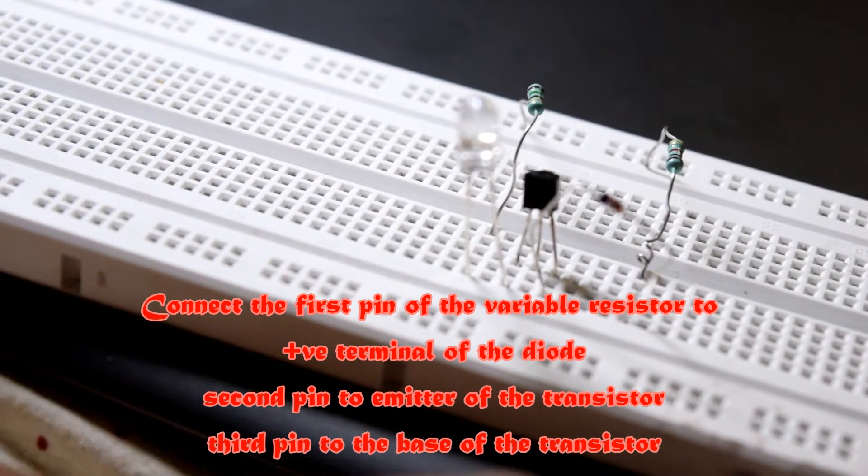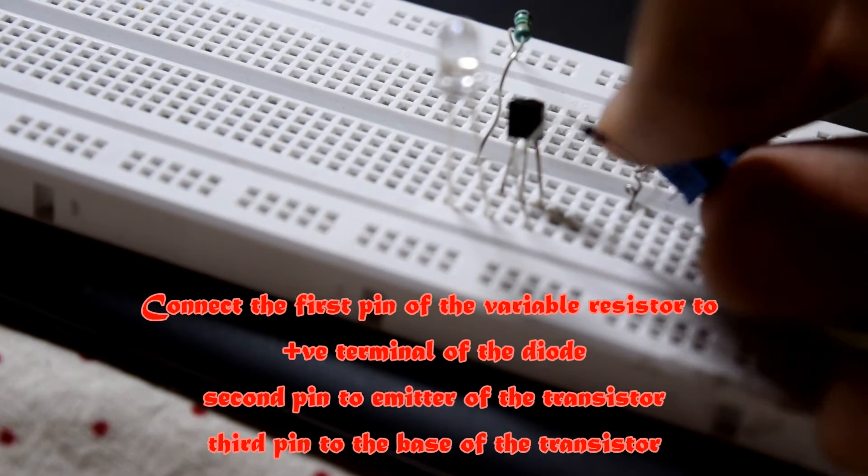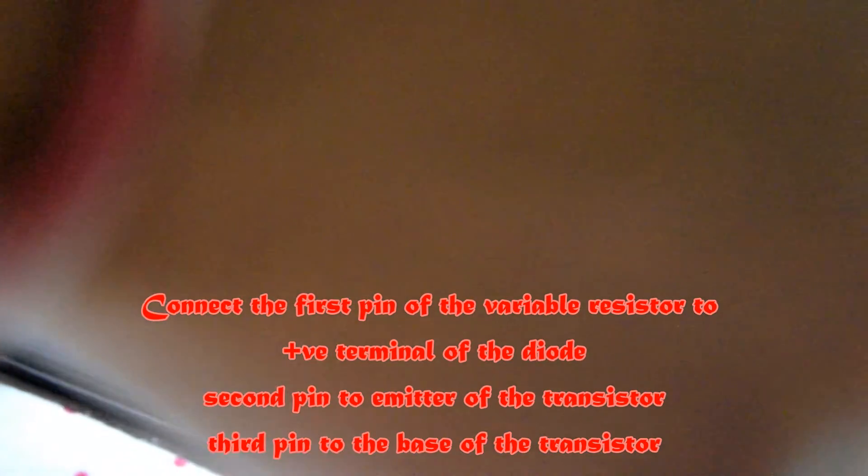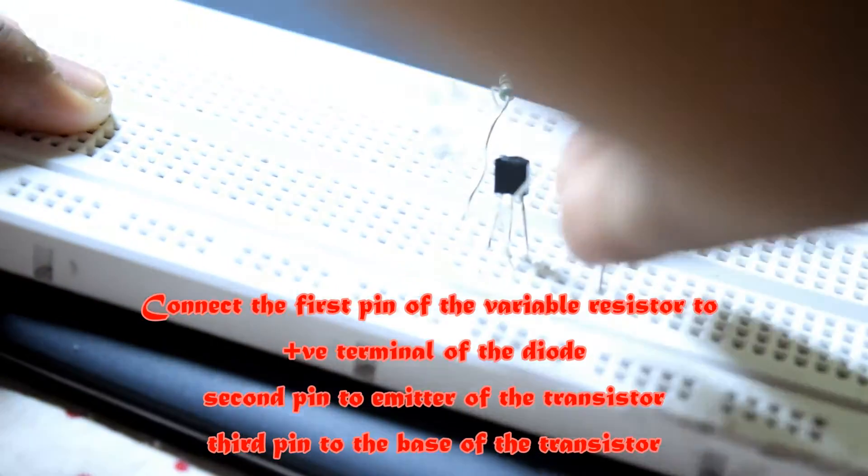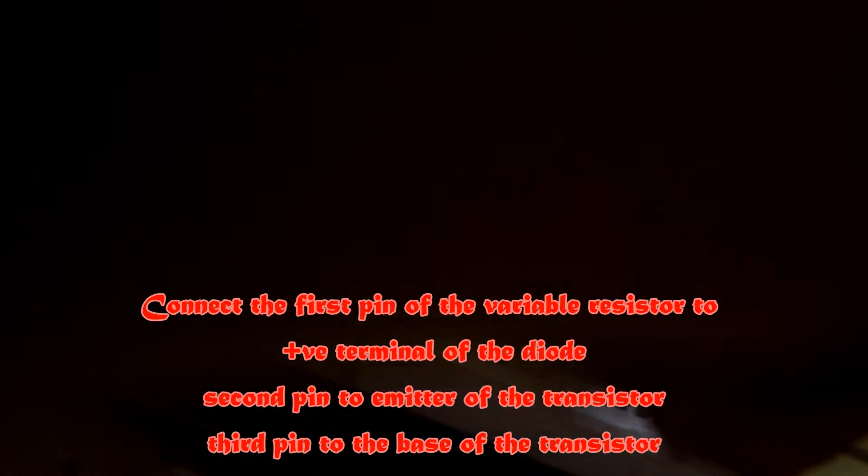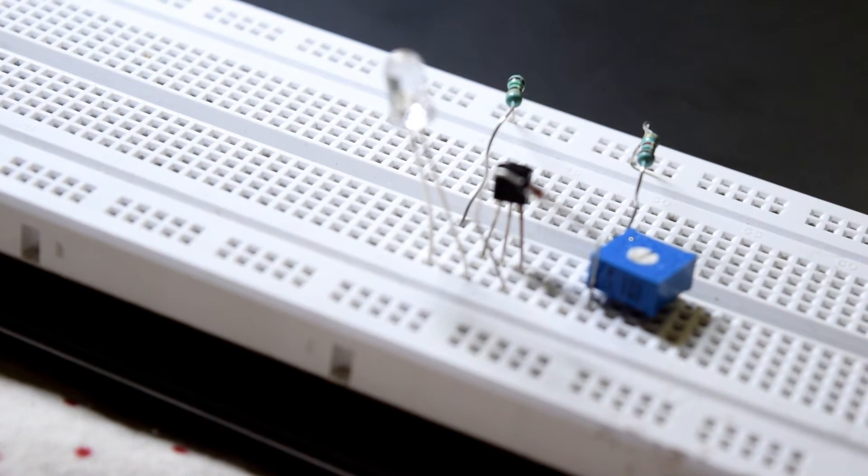Now take your variable resistor, connect its one pin to the positive terminal of the diode. By the way, you can use any 1K variable resistor like this.